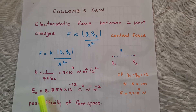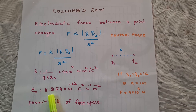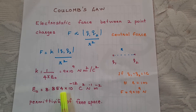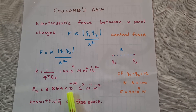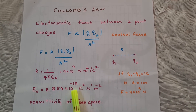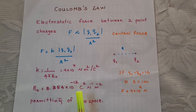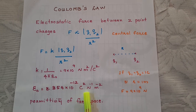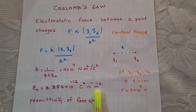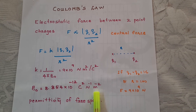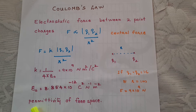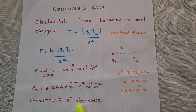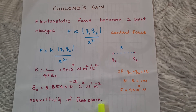And epsilon 0 is equal to 8.854 into 10 raised to minus 12 coulomb square per newton per meter square. It is known as the permittivity of free space.